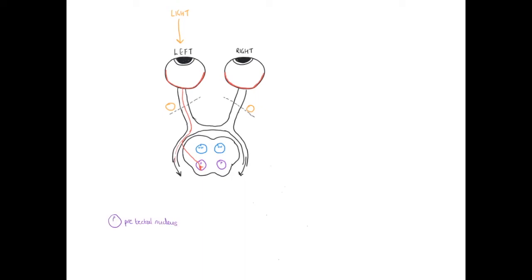From the pre-tectal nucleus, there is a communication with the Edinger-Westphal nucleus. From here, the efferent parasympathetic motor response to the light stimulus is sent out towards the sphincter pupillae muscle of the iris. The parasympathetic nerve fibre exits the midbrain, passes through a parasympathetic ganglion known as the ciliary ganglion — found within the orbit of the eye — where it synapses onto a second post-ganglionic parasympathetic fibre, ultimately reaching the muscle of the iris.